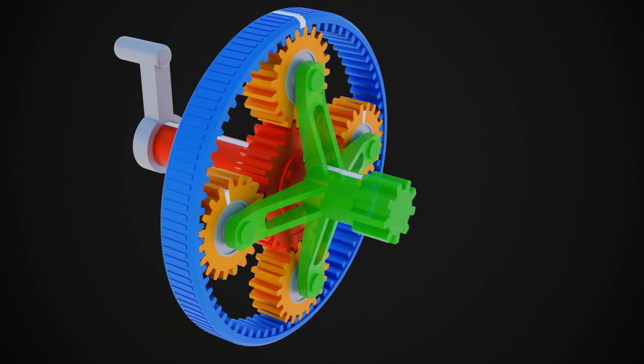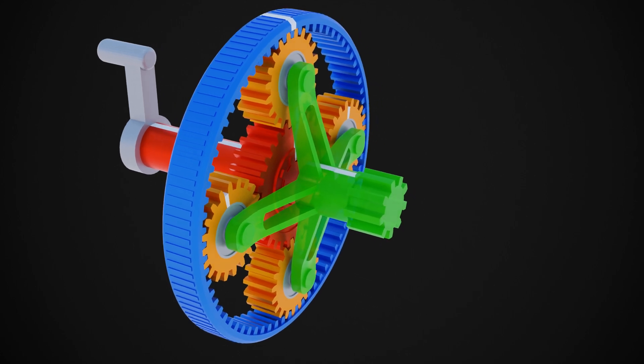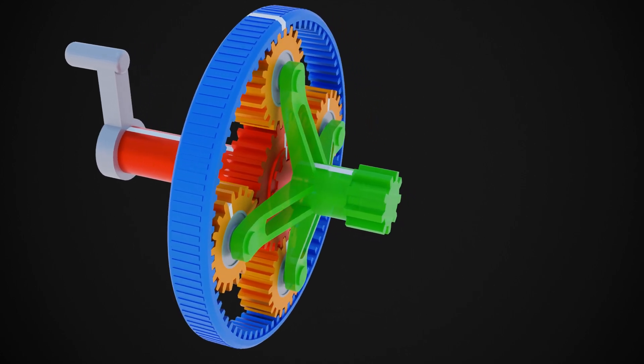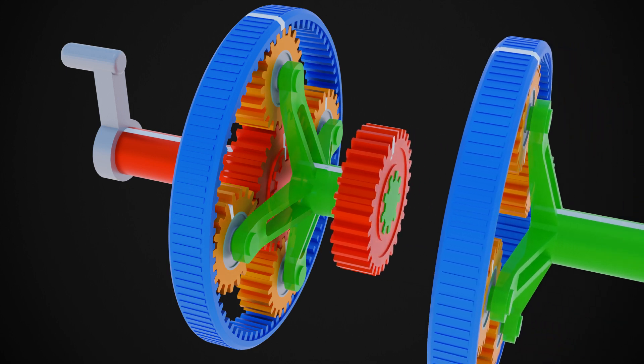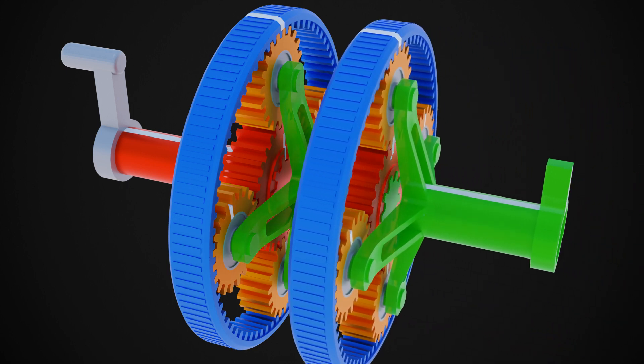This is a single stage planetary setup. By installing another sun gear on the carrier output shaft and adding another planet gears set and ring gear will further increase the reduction ratio.